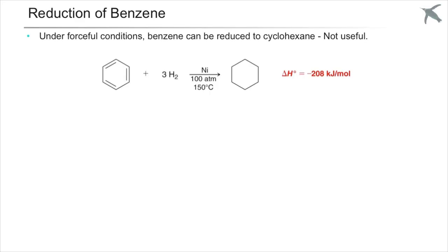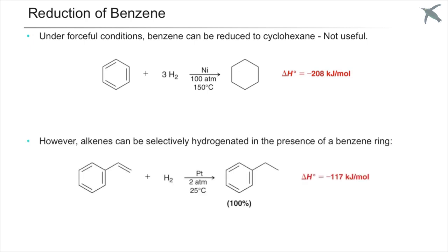Benzene can be reduced to cyclohexane under very forceful conditions, but the reaction is not very useful. However, alkenes can be selectively hydrogenated to a corresponding alkane in the presence of a benzene ring.